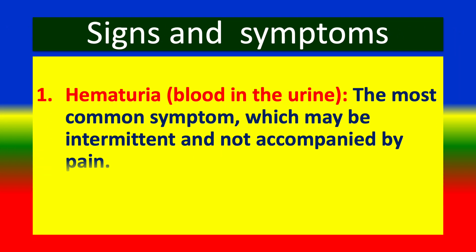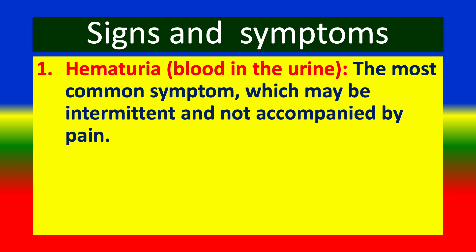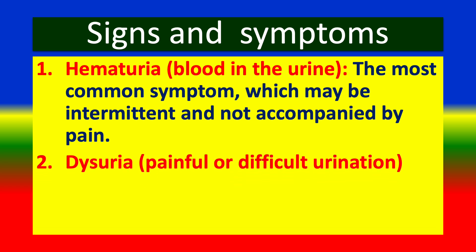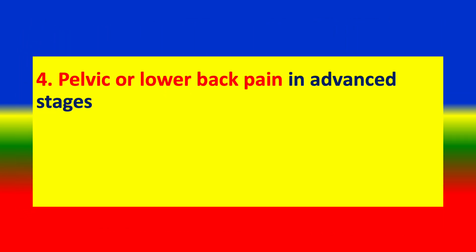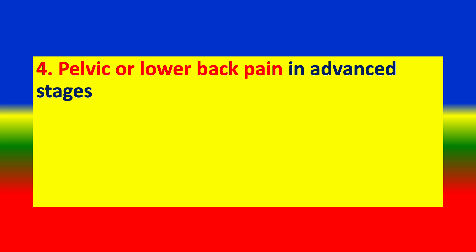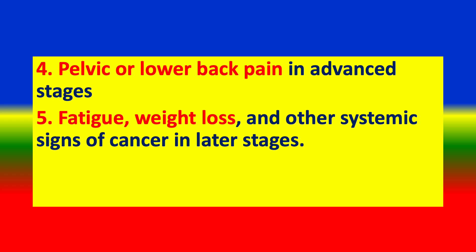Signs and symptoms: 1. Hematuria — blood in the urine, the most common symptom, which may be intermittent and not accompanied by pain. 2. Dysuria — painful or difficult urination. 3. Frequent urination, even when the bladder is not full. 4. Pelvic or lower back pain in advanced stages. 5. Fatigue, weight loss, and other systemic signs of cancer in later stages.